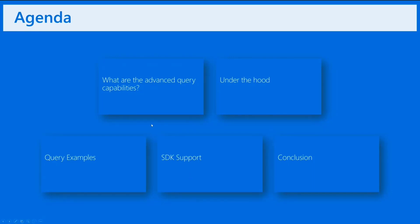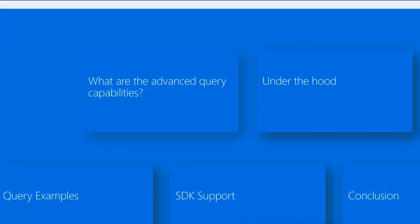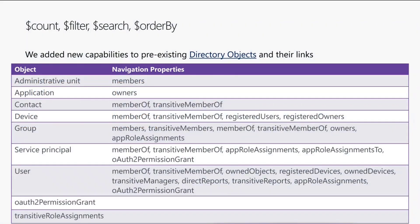Let's start with what are these query capabilities? They are additional functionalities that we added to the most common directory objects and their links. We indexed additional properties to the directory objects you see in the list, and we added new ways to filter, use order by, use count, and filter on top of those. All the ones that you see in the list are the currently supported ones, but that doesn't mean we will not add more in the future if you give us feedback.